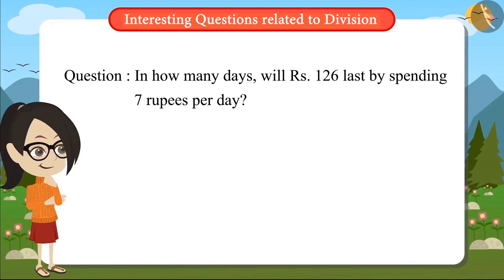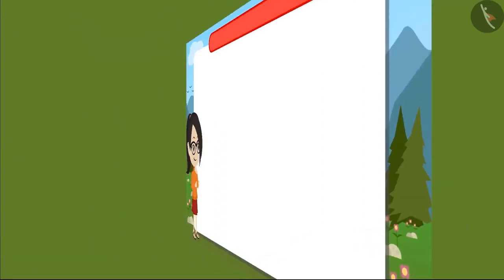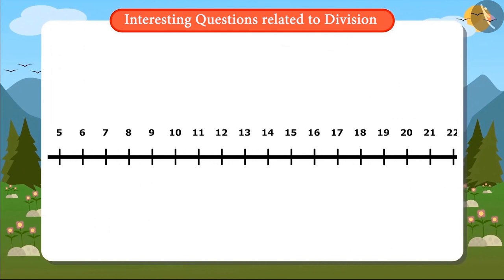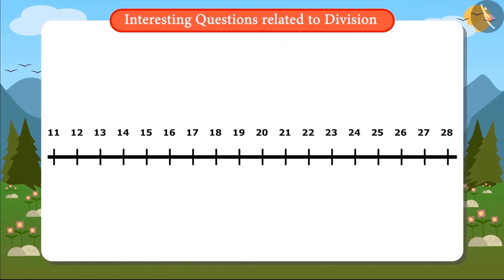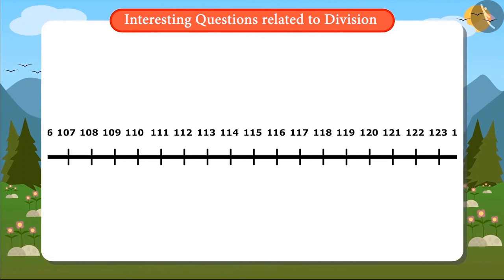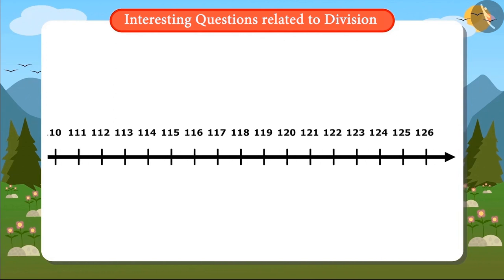Let's see how Vandana solved this problem. To solve this question, I have come up with a technique. I will write 126 on a number line. And now if I minus 7 from 126, I got to know that after one day, I will be left with 119 rupees. Now I will subtract 7 from 119. The answer is 112. By this I get to know that after two days, I will be left with only 112 rupees.